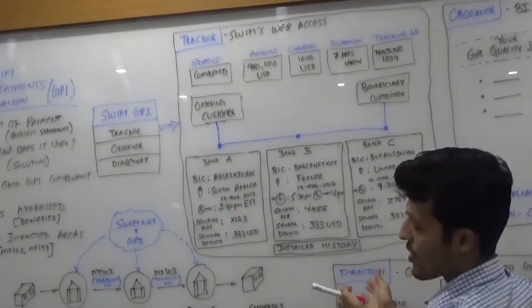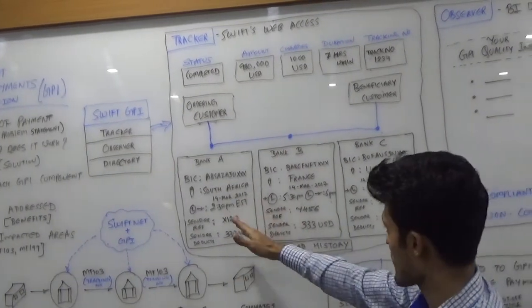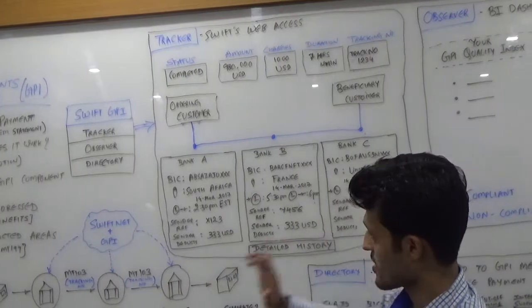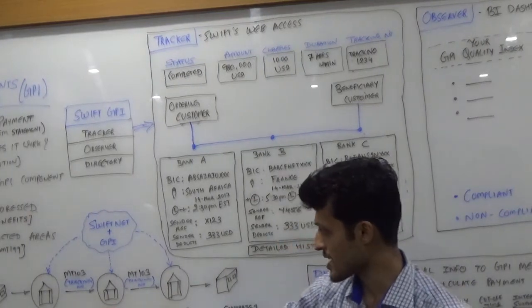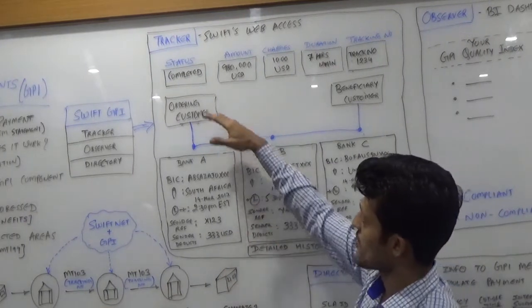This is an overview of how the payment is flowing from bank A to bank B to bank C, the same one that we have seen in the example. We can see the current status of it.